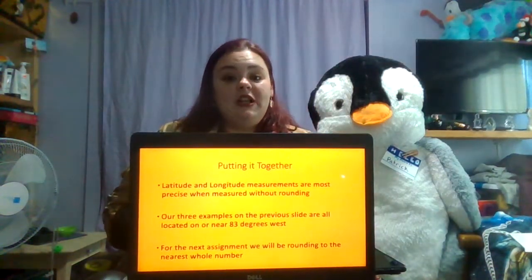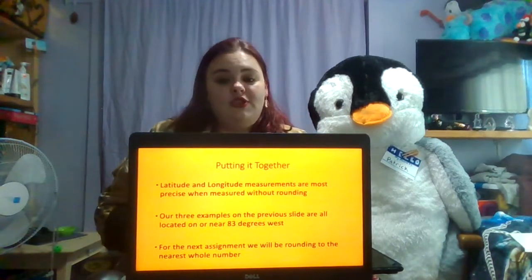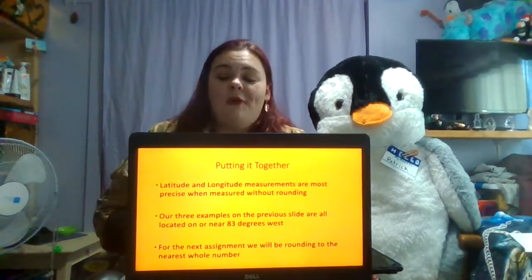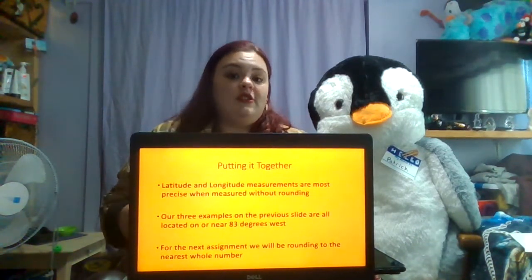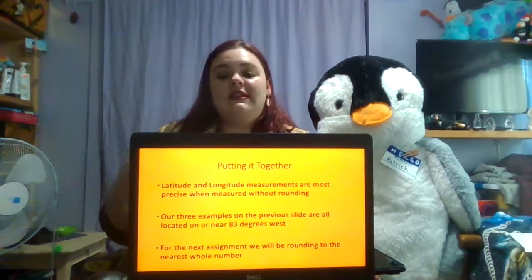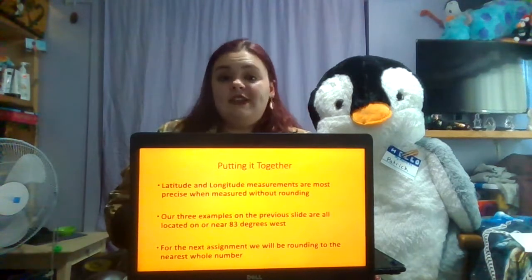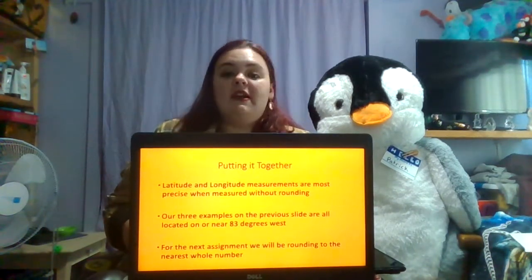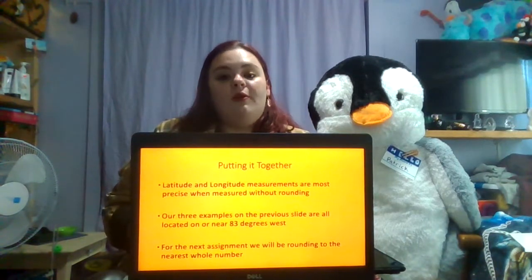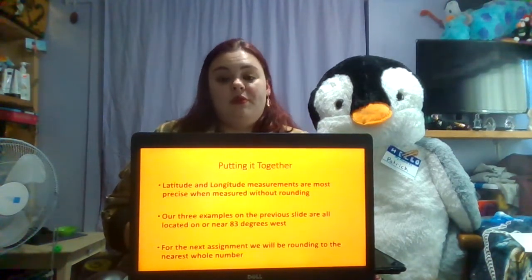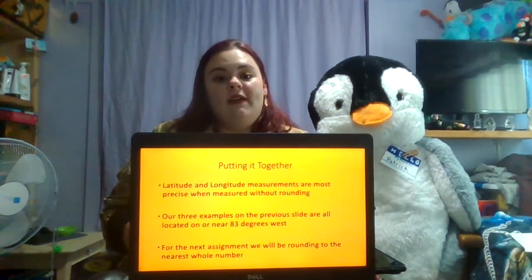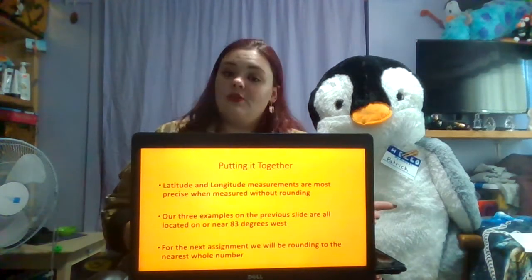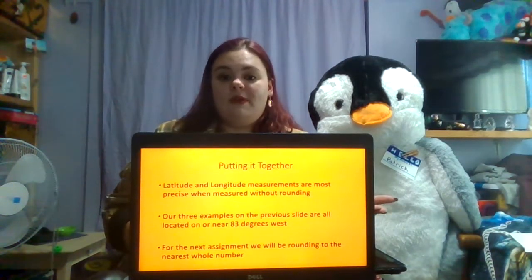Latitude and longitude measurements are most precise when measured without rounding — they can go ten or more numbers past the decimal. That is the most accurate way, but it gets complex. For our purposes, we will stick with rounding to whole numbers, just like in our three examples. That is why, although Jackson is between 82 and 83 degrees, it is closer to 83, so for our purposes it is located at 83 degrees west.